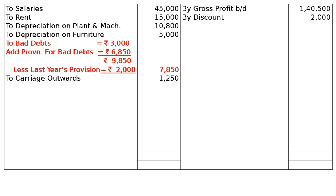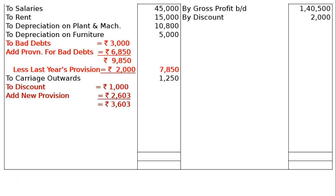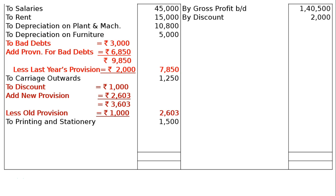To carriage outwards rupees 1,250. To discount rupees 1,000 from the debit side of the trial balance. The new provision for discount on debtors is calculated as: debtors less new provision for bad debts of rupees 6,850 equals rupees 1,30,150, and 2 percent of that is rupees 2,603. Shown in the inside column as rupees 3,603. Less old provision for discount on debtors from the credit side of the trial balance rupees 1,000. Final column: rupees 2,603. Then printing and stationery rupees 1,500.